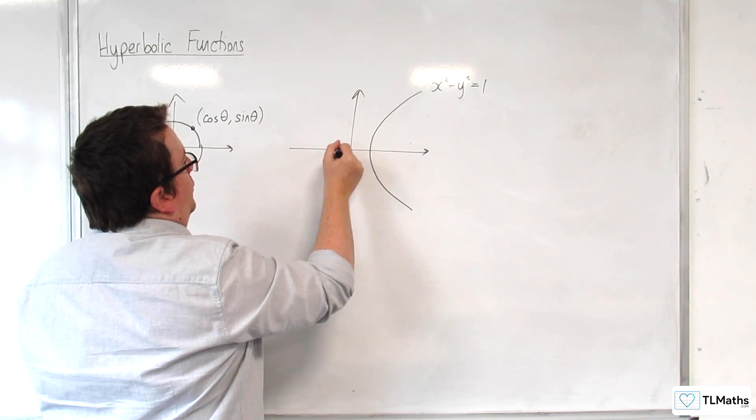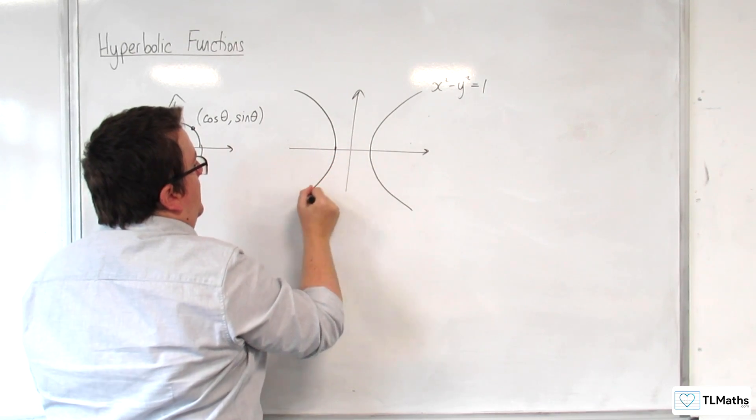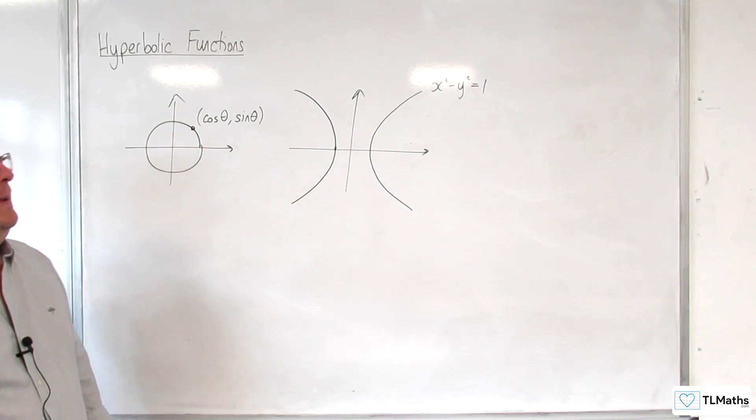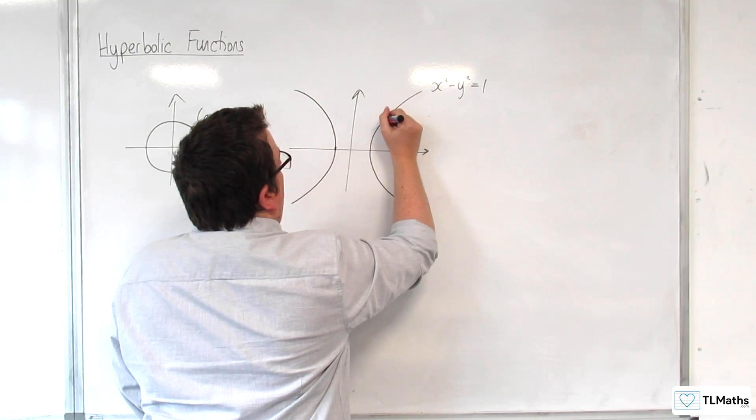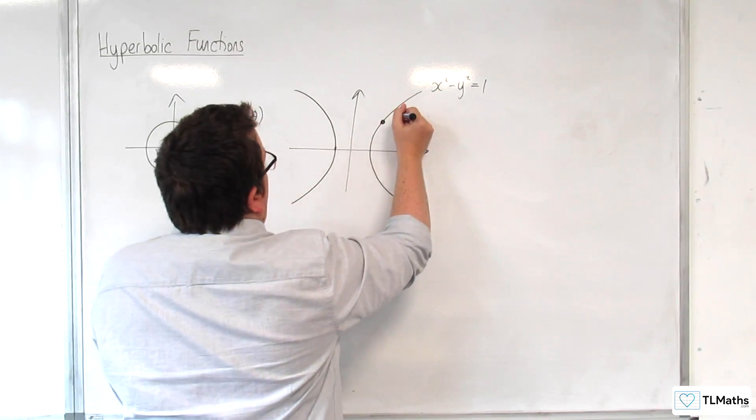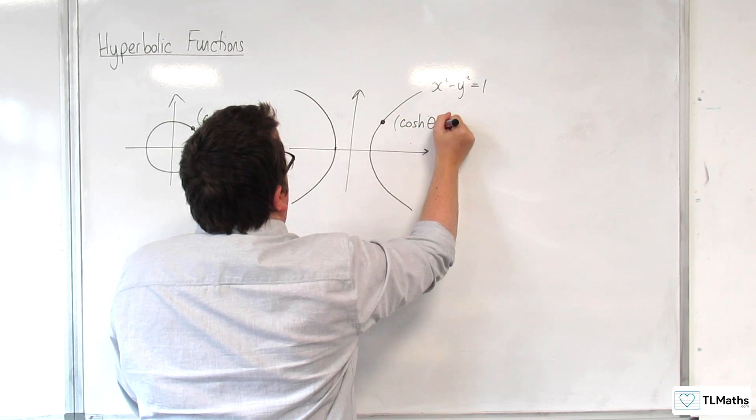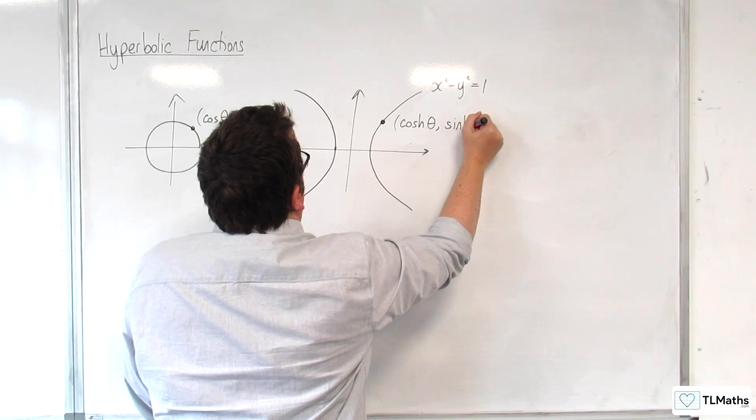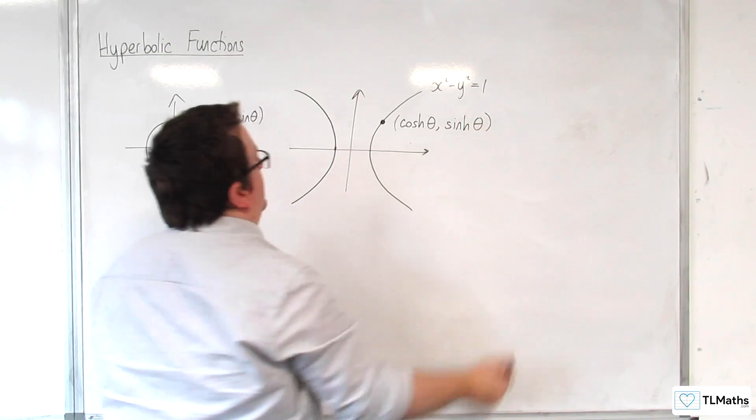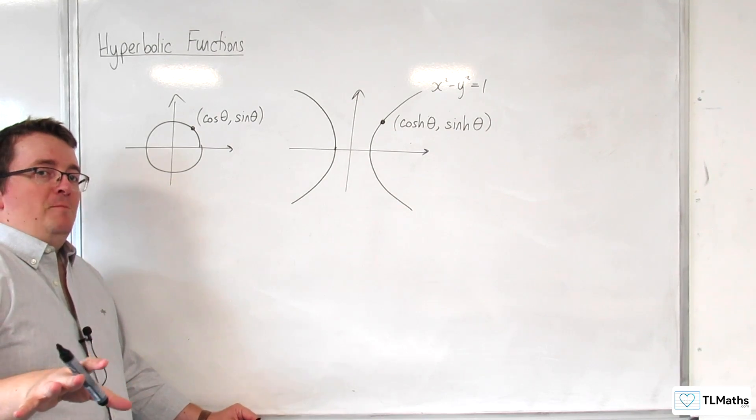Now, it would also have the second half of it, which would be over here. And a point on this curve can be parameterized in this way, writing cosh of theta and sinh theta. Now, I'm going to be clear on how to pronounce these in a moment.